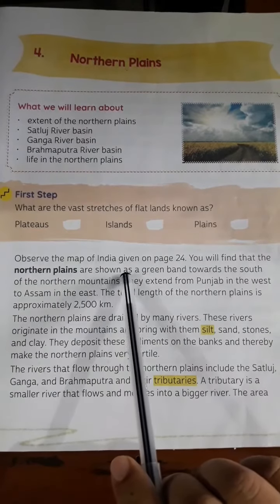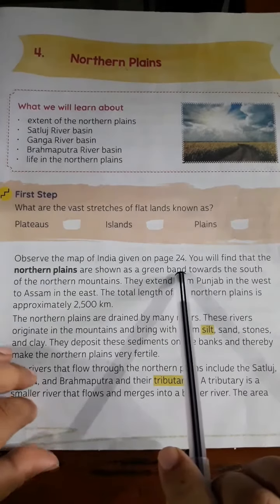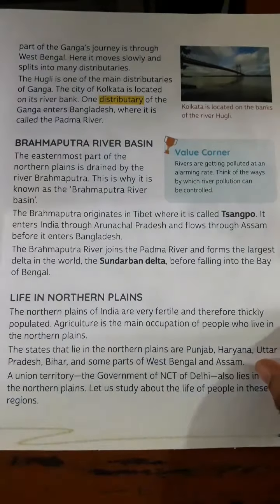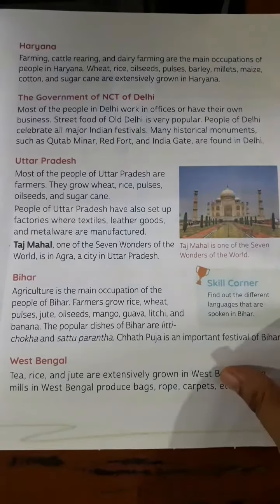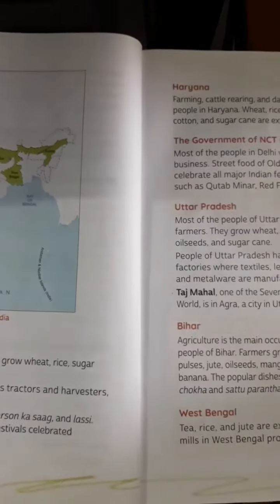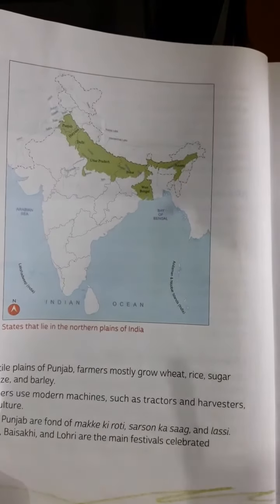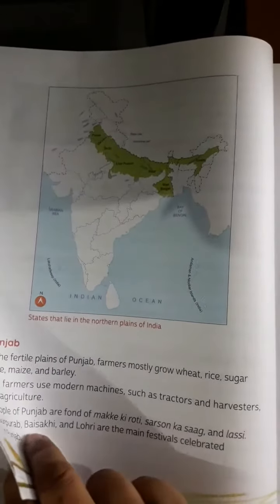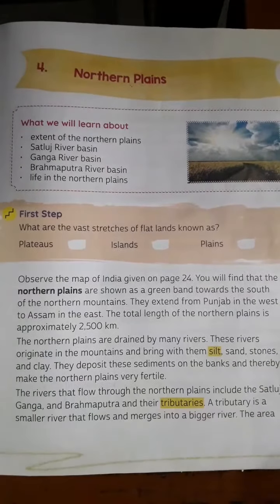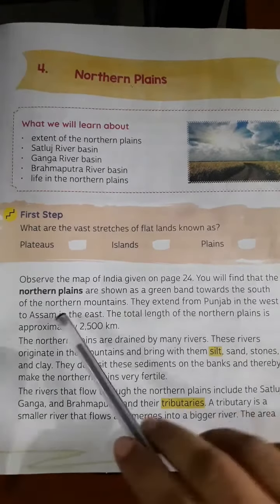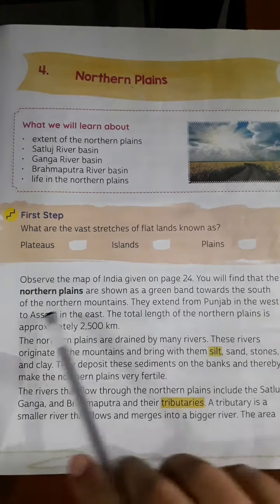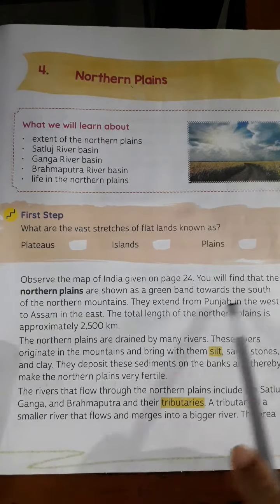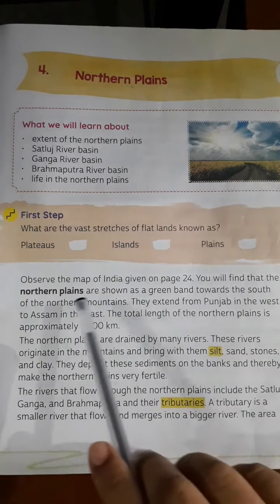Observe the map of India given on page 24. In your book, on page 24, you will find the Plains area shown in green. The Northern Plains are shown as a green band towards the south of the Northern Mountains.